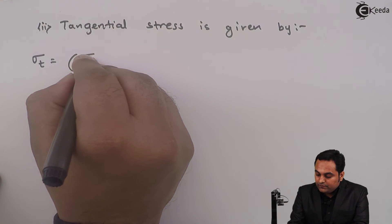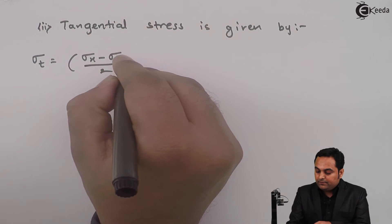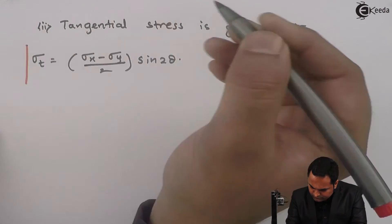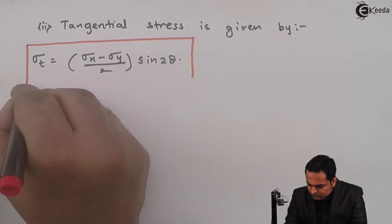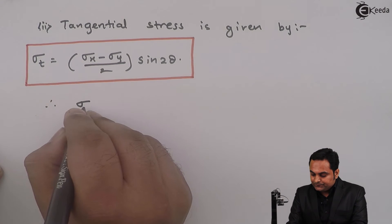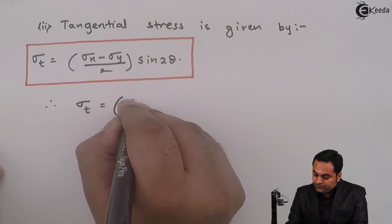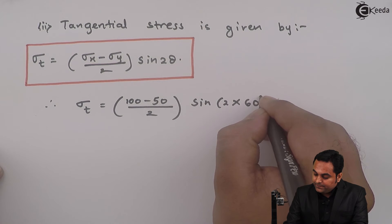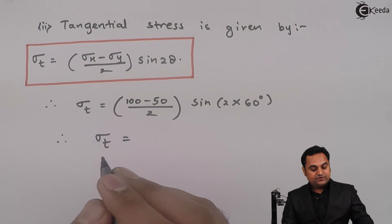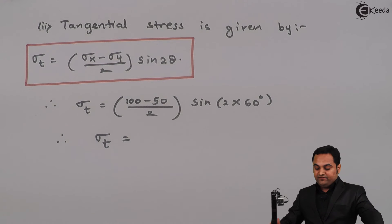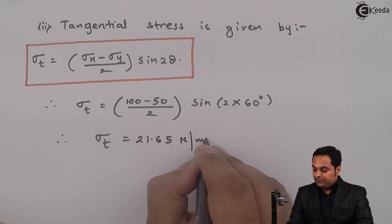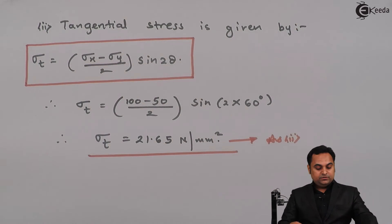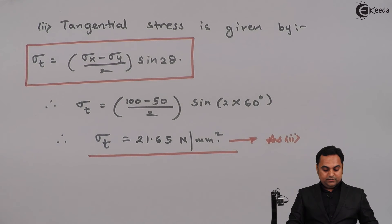After getting the normal stress, we find the tangential stress. The formula is: Sigma T = (Sigma X − Sigma Y) / 2 × sin 2θ. Putting the values — Sigma X = 100, Sigma Y = 50, sin(2 × 60°) — the tangential stress comes out to be 21.65 Newton per mm square. This is the second answer.